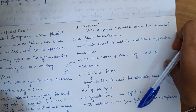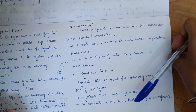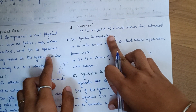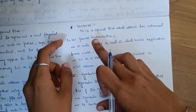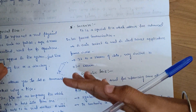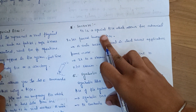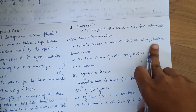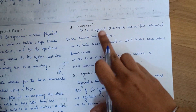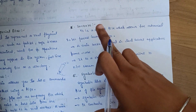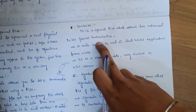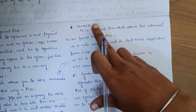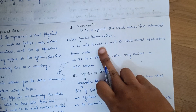Sockets are a special file type which allows advanced inter-process communication. A Unix socket is used in client-server application frameworks. Sockets use a stream of data, similar to a network stream.